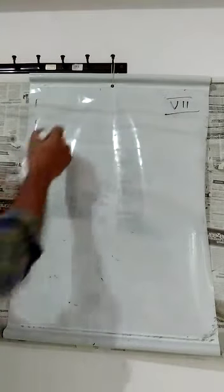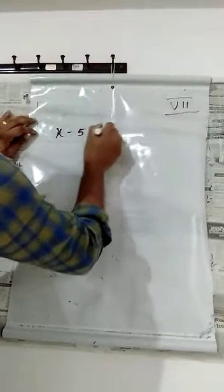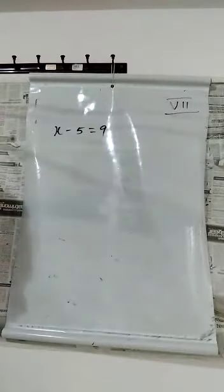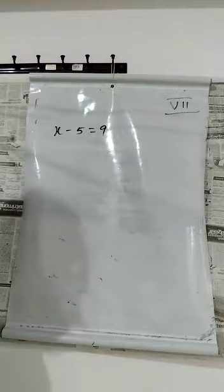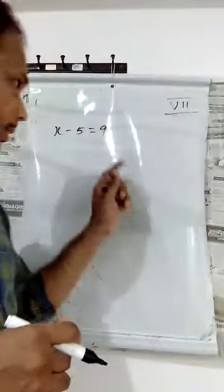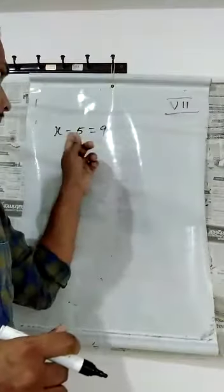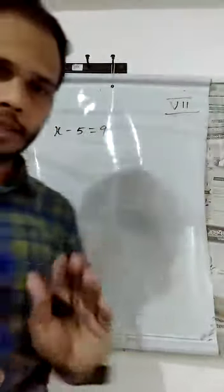First one. The equation is x minus 5 equal to 9. This is a mathematical equation: x minus 5 equal to 9. When we are subtracting 5 from x, the result is 9.